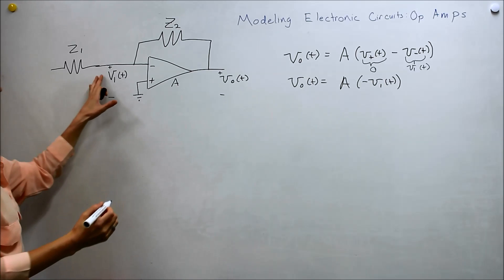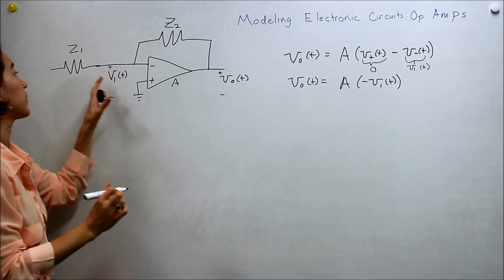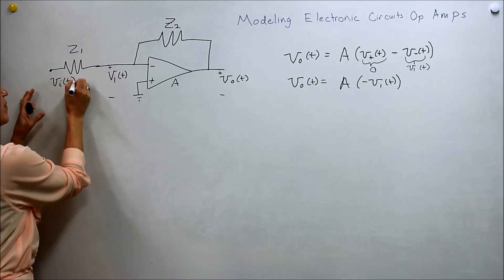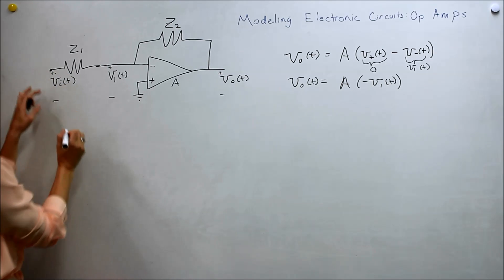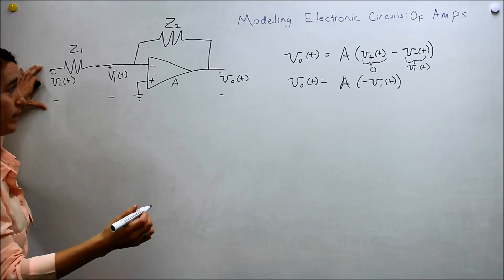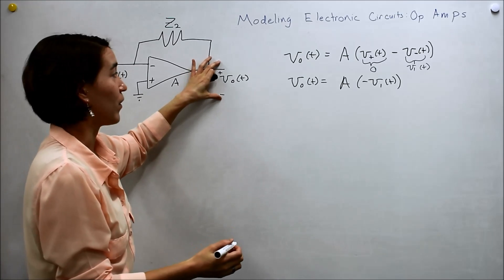And now, V1 is not our input. Actually, this voltage here, we're going to call it VI of T from here positive to ground. This is our input. And then this, Vout, is our output.